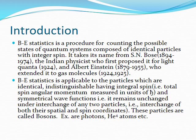Bose-Einstein statistics is applicable to particles which are identical, indistinguishable, having integral spin — i.e., total spin angular momentum measured in units of h-cross — and symmetrical wave functions, i.e., it remains unchanged under interchange of any two particles, meaning interchange of both their spatial and spin coordinates. These particles are called bosons. Examples are photons, He-4 atoms, etc.